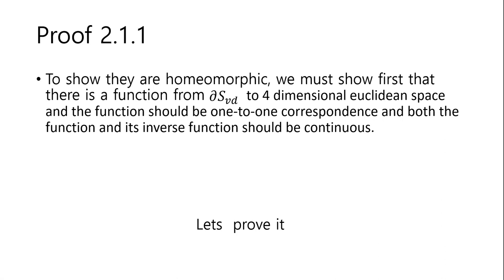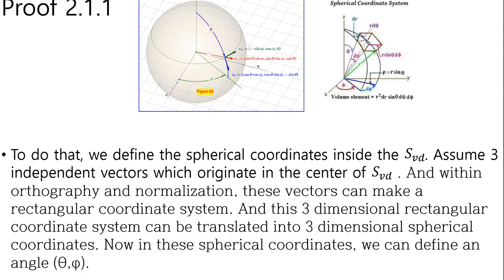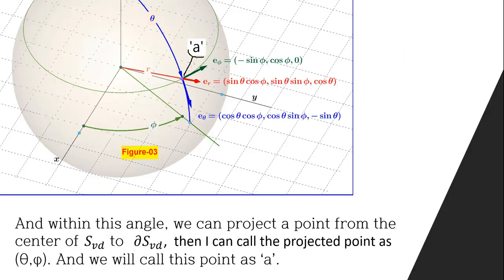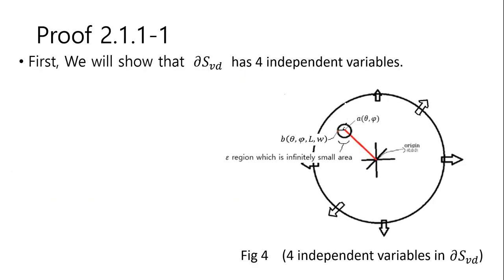To show they are homeomorphic, we must first show that there is a function from DS3D to 4-dimensional Euclidean space. The function should be one-to-one correspondence, and both the function and its inverse function should be continuous. To do that, we define the spherical coordinate inside the SVD. Assume three independent vectors originating at the center of S3D. With orthogonality and normalization, these vectors can make a rectangular coordinate system, which can be translated into 3-dimensional spherical coordinates. In this spherical coordinate, we define angles theta and phi, and within these angles, we can project a point from the center of SVD to DS3D. The projected point is called theta phi, which we call point A.